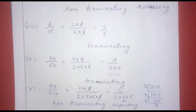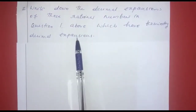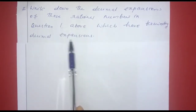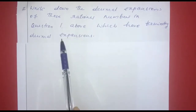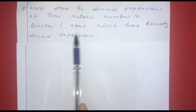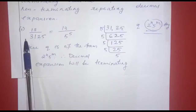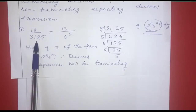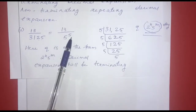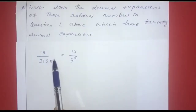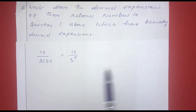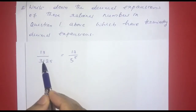The second question asks us to write down the decimal expansions of those rational numbers from question 1 which have terminating decimal expansions. We need to identify which numbers are terminating and then find their actual decimal expansions.